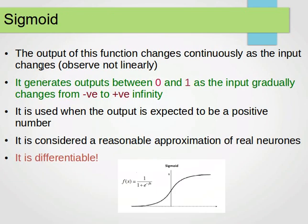The third one is a very important one, the sigmoid function. The output of this function changes continuously as the input changes. Observe, it doesn't change linearly, but it changes continuously. If you notice here, this is the equation of the sigmoid function: f(x) equals 1 over 1 plus e to the power minus some coefficient times x. And if you notice now, the value of the output is always between 0 and 1.